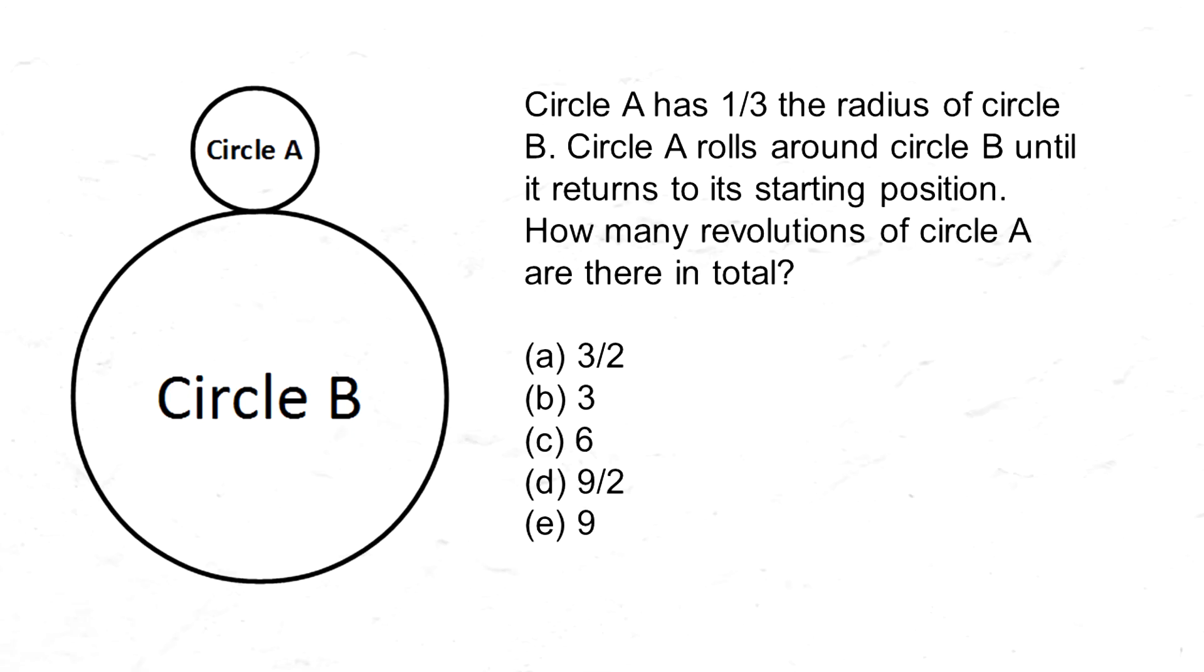Circle A has one-third the radius of circle B. Circle A rolls around circle B until it returns to its starting position. How many revolutions of circle A are there in total? Here are some answer choices.